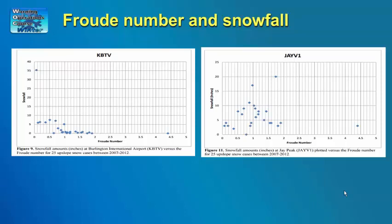For northwest flow, significant snowfall can occur at Burlington as long as the Froude number is less than one — the flow is blocked and snow falls upstream of the Green Mountain ridge barrier. When the Froude number is greater than one and flow is able to go up and over the terrain, significant snowfall in Burlington does not occur. By contrast, Jay Peak, located at the top of the Green Mountain barrier, experiences its heaviest snowfalls over a wider range of Froude numbers.